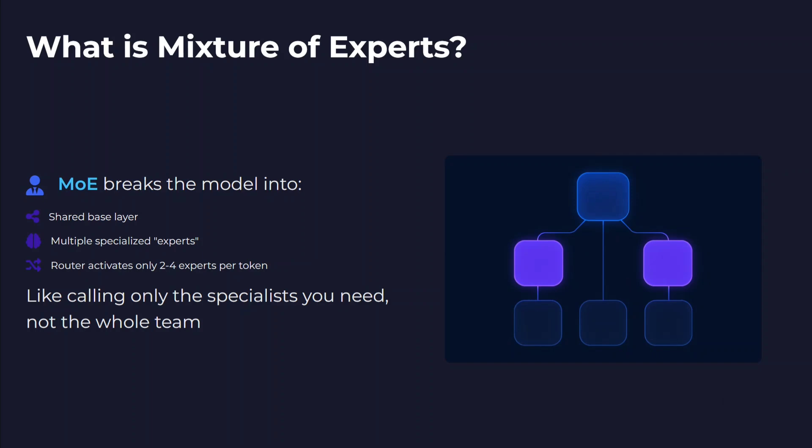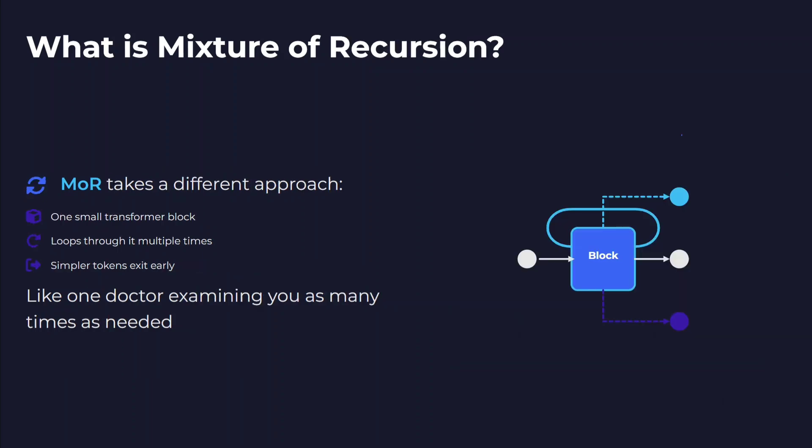Mixture of Recursions (MoR) takes a different approach. It is a transformer block that loops multiple times. You are using the same set of weights — not wasting resources. Though the model can be large, the weights remain the same and the same set of weights are repeated multiple times. It's like one doctor examining you as many times as needed.